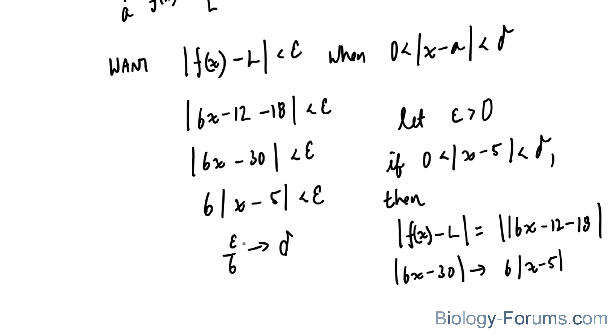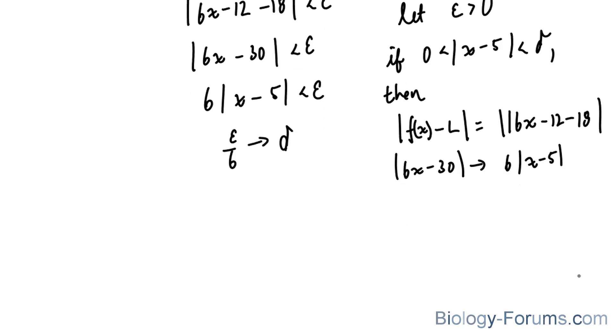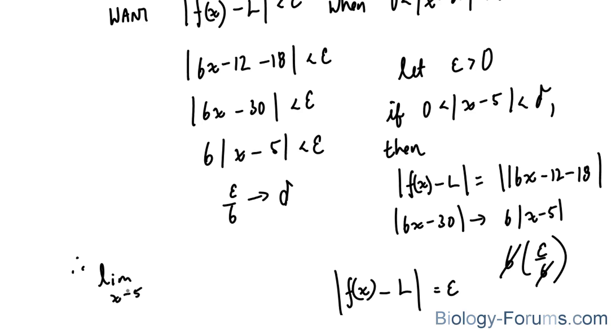This, we know, is equal to delta, and delta, we know, is equal to epsilon over 6. The two 6's cancel out, leaving us with simply f at x minus L equals epsilon. And so therefore, our limit as x approaches 5 for the function 6x minus 12 is, in fact, 18.